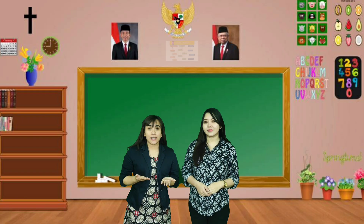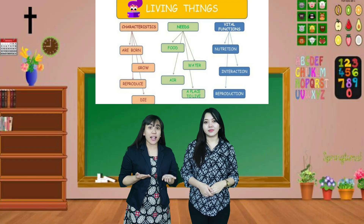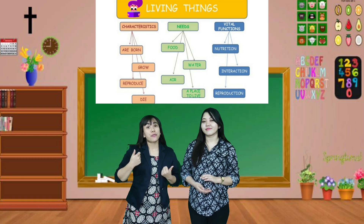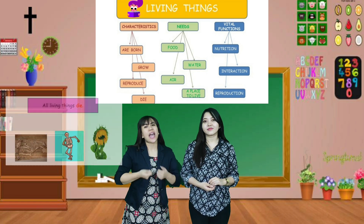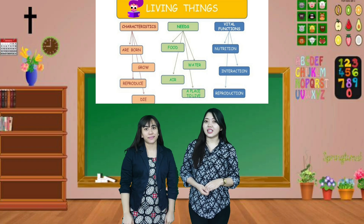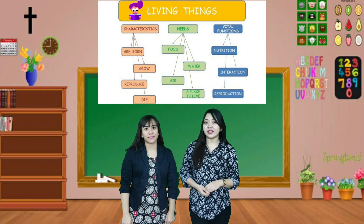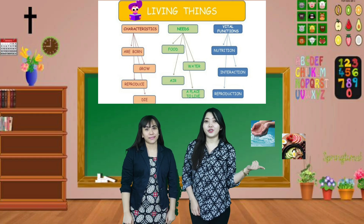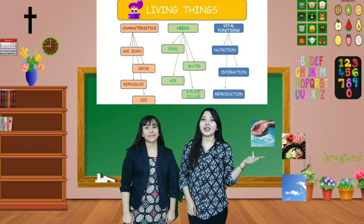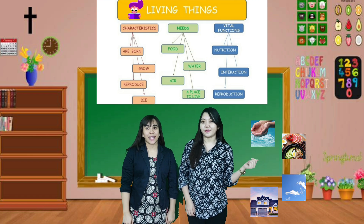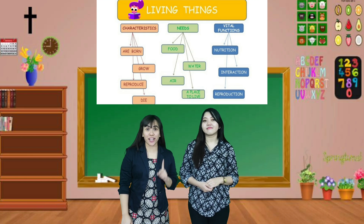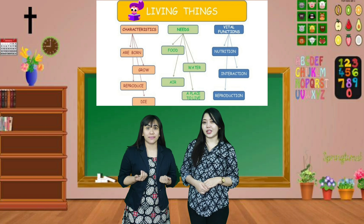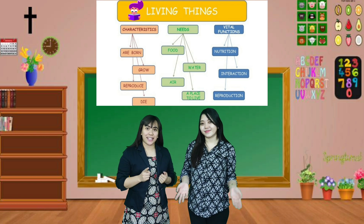Living things have characteristics such as they are born, grow, reproduce, and die. The needs of living things are water, food, air, and a place to live. And they have the vital functions — they need nutrition, interaction, and reproduction.